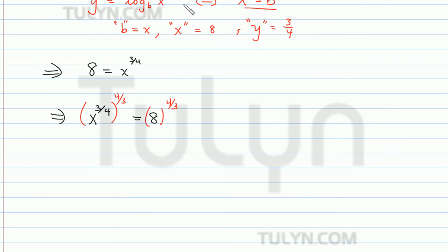Remember, when you take an exponent to another exponent, you have to multiply the exponents. So in this case, on the left, we multiply 3 fourths times 4 thirds, which the numerators cancel out with the denominators, and so we end up just getting 1 over 1, which is just 1.